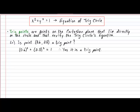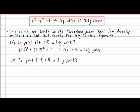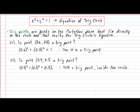Let's try checking another point. For our next example, I would like to see if the point (0.9, 0.1) is in fact a trig point. Proceeding carefully, you will find that the sum of the squared values of x and y equals 0.82. This means that this point does not lie directly on the circle. Not only is this point not a trig point, it's a point that's actually located inside the circle, because 0.82 is shorter than the radius of 1.